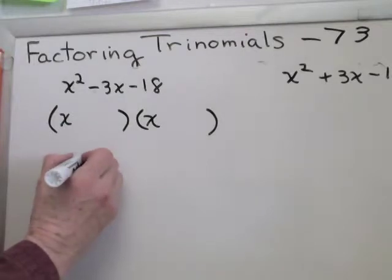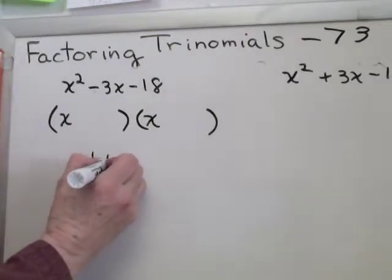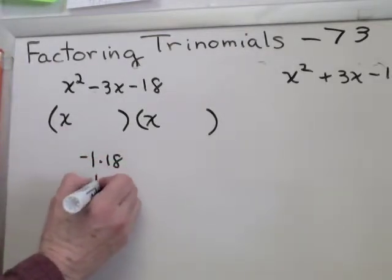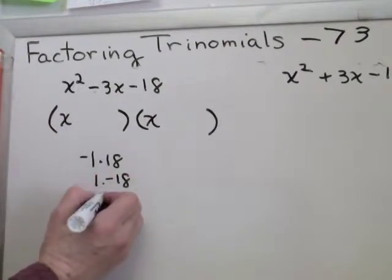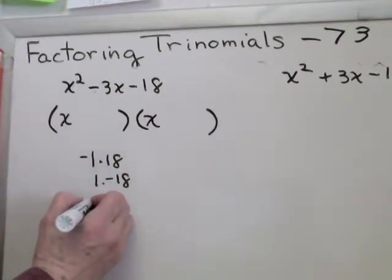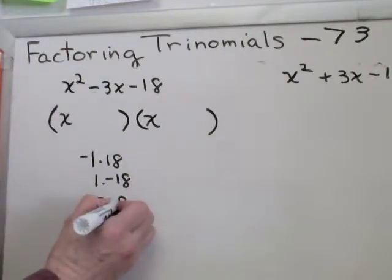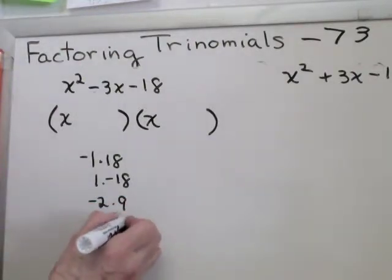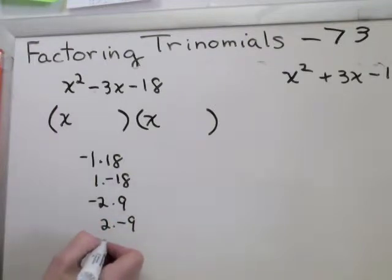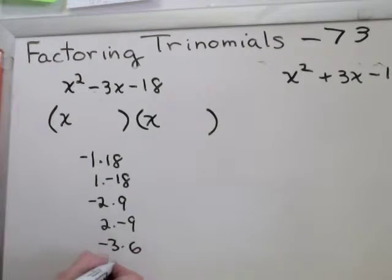So factors of negative 18: negative 1 times 18, 1 times negative 18. Does 2 go into 18? Oh yeah, 2 times 9, so negative 2 times 9, and 2 times negative 9. Does 3 go into 18? Oh yeah, so minus 3 times 6, 3 times minus 6.